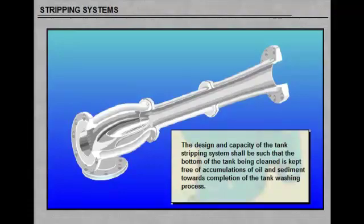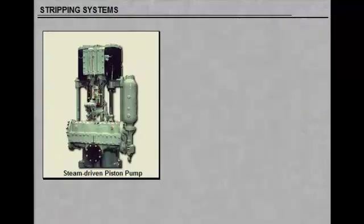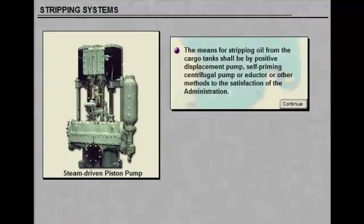The means for stripping oil from the cargo tanks shall be by positive displacement pump, self-priming centrifugal pump, or eductor, or other methods to the satisfaction of administration. An oil tanker must be provided with a separate stripping pump. This stripping pump may be connected to the ordinary line system or be supplied with its own line system.